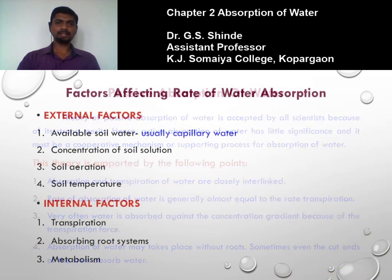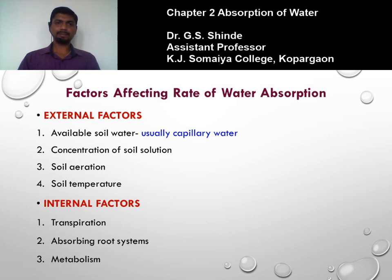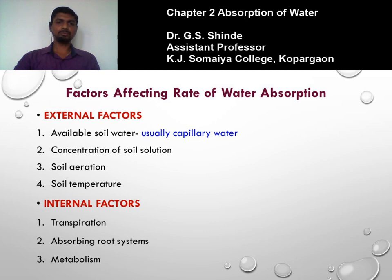Now the last topic of this chapter: factors affecting the rate of water absorption. These are categorized into two types — external factors and internal factors. External factors are mostly environmental factors related to soil, for example: available soil water, concentration of soil solution, soil aeration, and soil temperature. Internal factors include transpiration, absorbing root system, and metabolism. We will study each one by one.